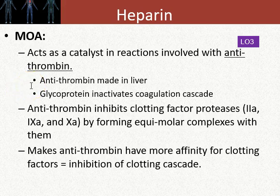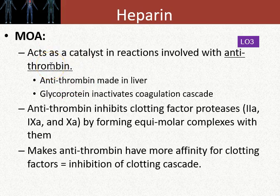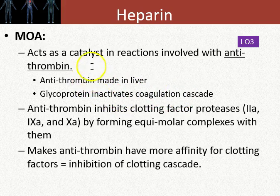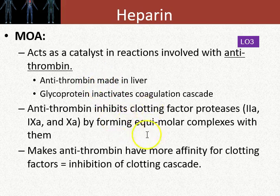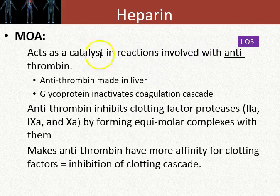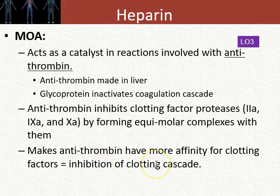Mechanistically, heparin acts like a catalyst in reactions involving antithrombin binding to either thrombin or factor 10a. Antithrombin is the endogenous inhibitor of the coagulation cascade, made in the liver — a glycoprotein that inactivates the cascade. All heparin does is take the inhibitor of the coagulation cascade and bring it together with the activator, binding them faster — almost like an enzymatic catalyst — increasing antithrombin's affinity for the clotting factors.